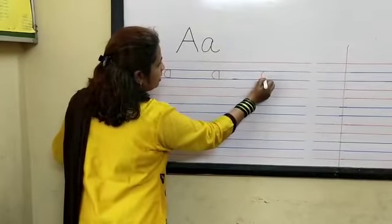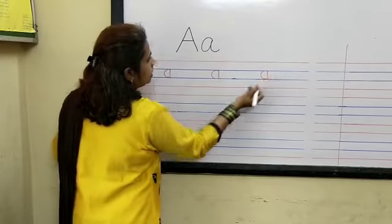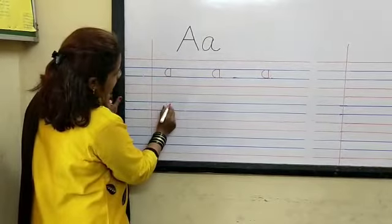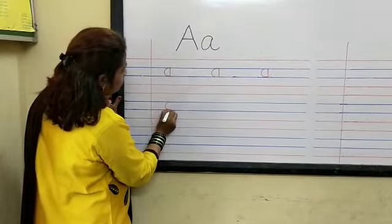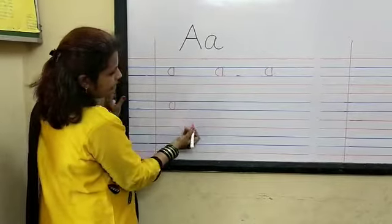First a curve, standing line and a small curve. A. Curve, standing line and a small curve. A.